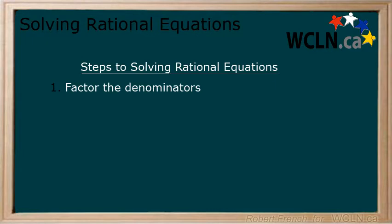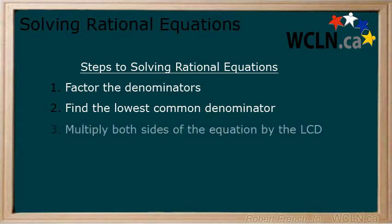1. Factor the denominator. 2. Find the lowest common denominator. 3. Multiply both sides of the equation by the lowest common denominator. This step allows you to cancel all of the terms in the denominator.